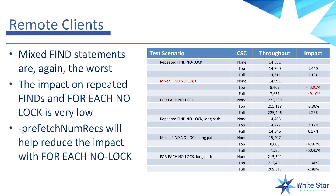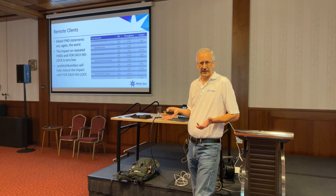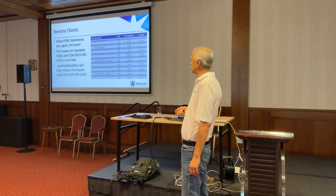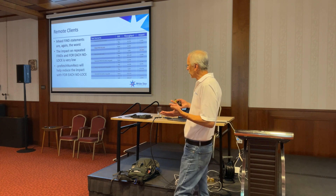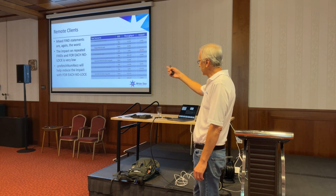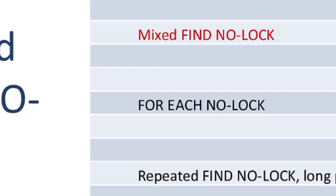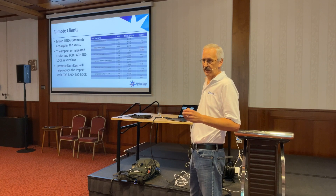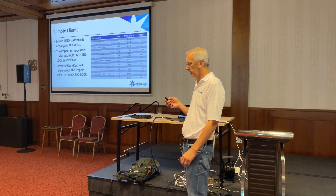For remote clients, the impacts were fairly similar: mixed find once again has the biggest impact at around 40 to 50%. Foreach is not really much of an impact. And prefetch — relating to Ron's question — if you do increase it, it will have an impact on foreaches because you're packing more records into each query, so the change in the statement happens less frequently and the information has to go back and forth to the server less often.